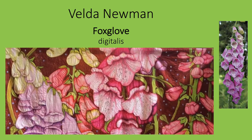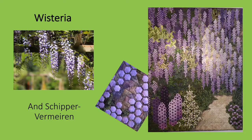Newman focused on the foxglove in this quilt, which is five feet by eleven and a half feet. The blooms are created using hand-dyed fabrics, paint, and inks, and the quilt is then hand-stitched and hand-quilted. A profusion of pendulous wisteria are captured in this quilt by Anne Schipper Vermeeren, the Netherlands quilter whose hollyhock quilt we looked at earlier. Here again, she's using tiny hexagons to capture the blooms.